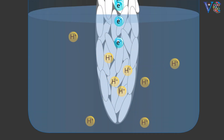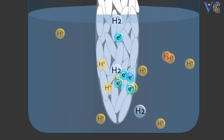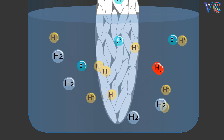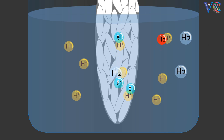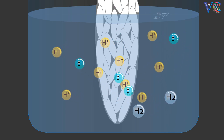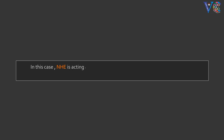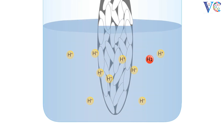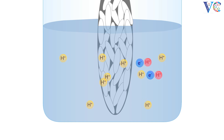There takes place the reduction of H⁺ ions. As a result, hydrogen gas is formed and is eliminated. In this case, the SHE is acting as a cathode in the cell, as the reduction of H⁺ ions to hydrogen is taking place. When hydrogen atoms undergo oxidation — that is, lose electrons — the SHE acts as an anode in that cell.